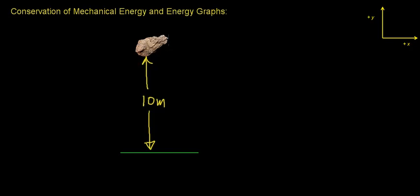In this video, we're going to apply the conservation of mechanical energy to find the velocity of an object after it falls a total distance of 5 meters from its starting point. The first thing we want to do is identify our coordinate system. The up direction is going to be the positive y direction, and it's customary to label the ground as y equals 0 meters — that is, the ground is going to be the origin of our coordinate system.